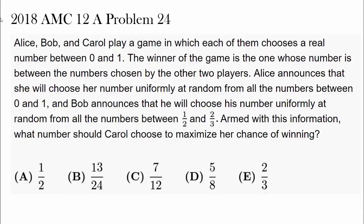So we have Alice, Bob, and Carol, and they are playing a game. Exciting! Each of them are choosing a real number between 0 and 1. The winner of the game is the one whose number is between the numbers chosen by the other two players.